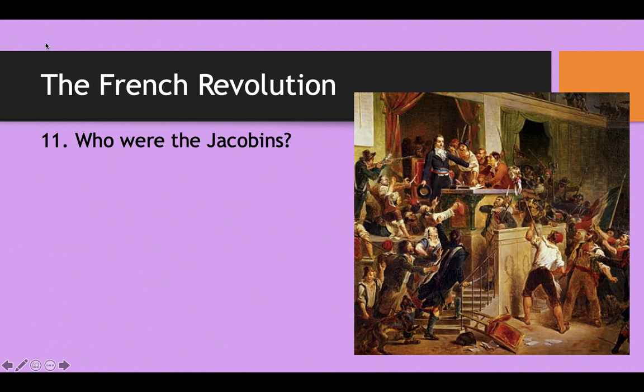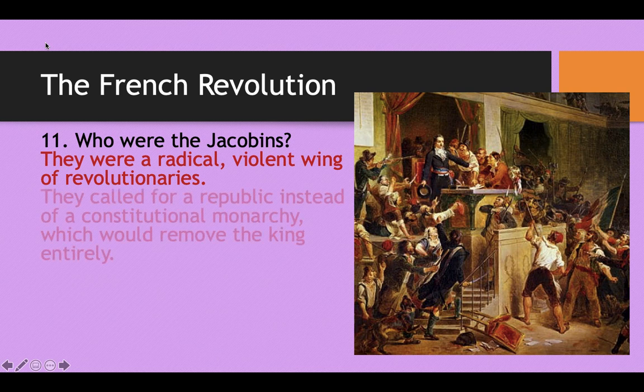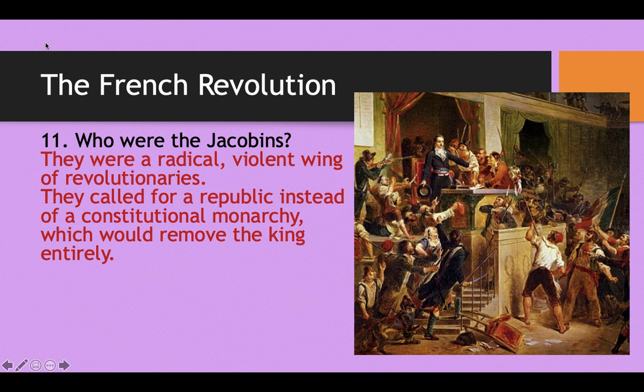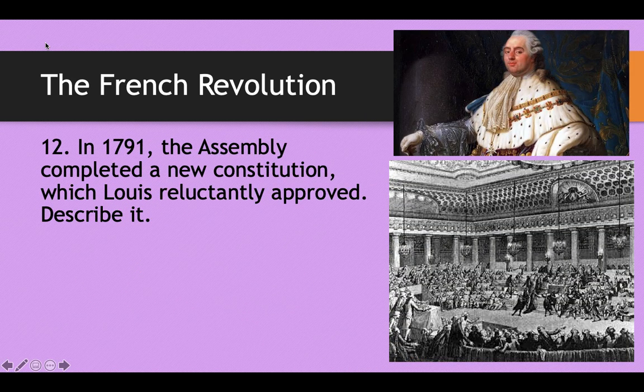A group that was very destructive during the French Revolution were the Jacobins — the most radical, violent, extremist wing of the revolutionaries. They called for a republic instead of a constitutional monarchy, which would remove the king entirely. They held a protest march and were actually fired upon by troops of the National Assembly — not troops of the King, but the other peasants who had established the Declaration of the Rights of Man. Fifty of them were killed. This fragmentation is a big reason why the French Revolution was not successful like the American Revolution was.